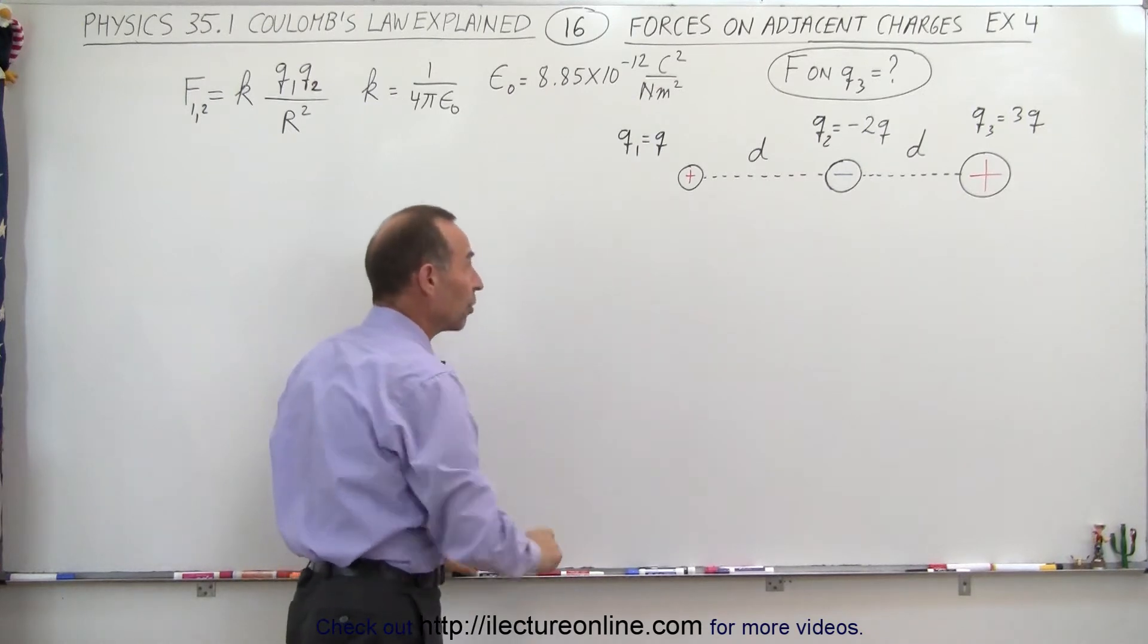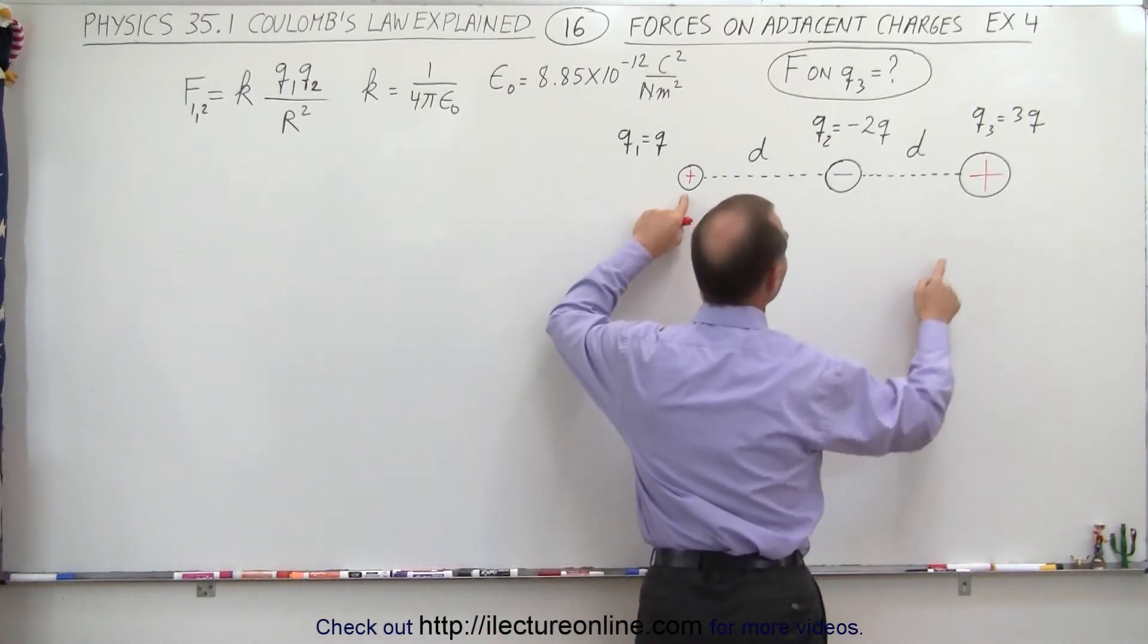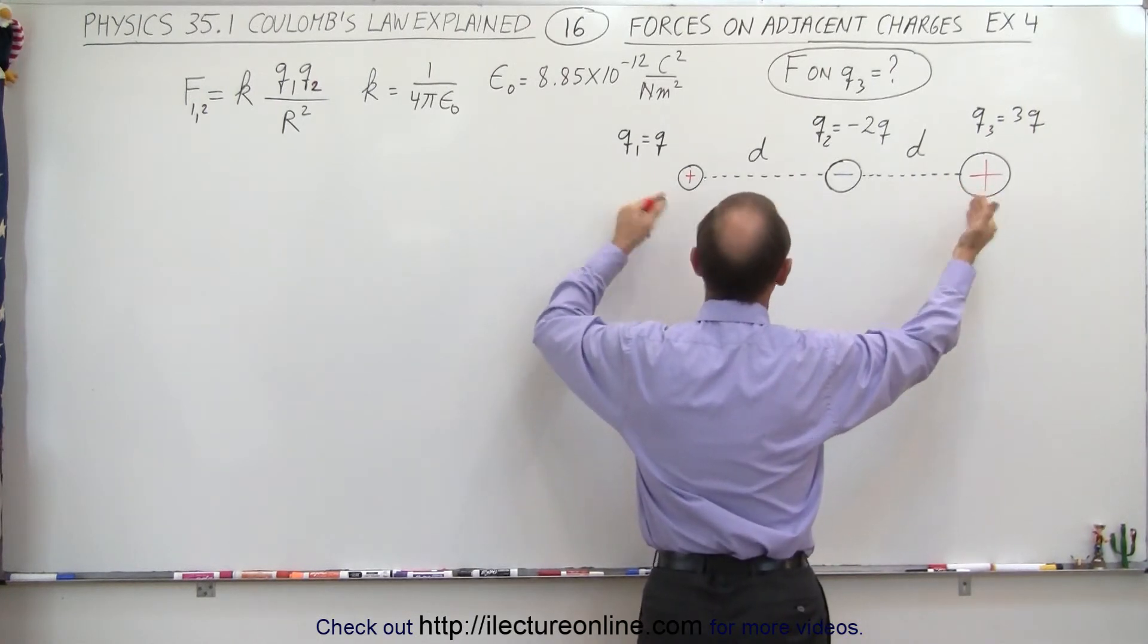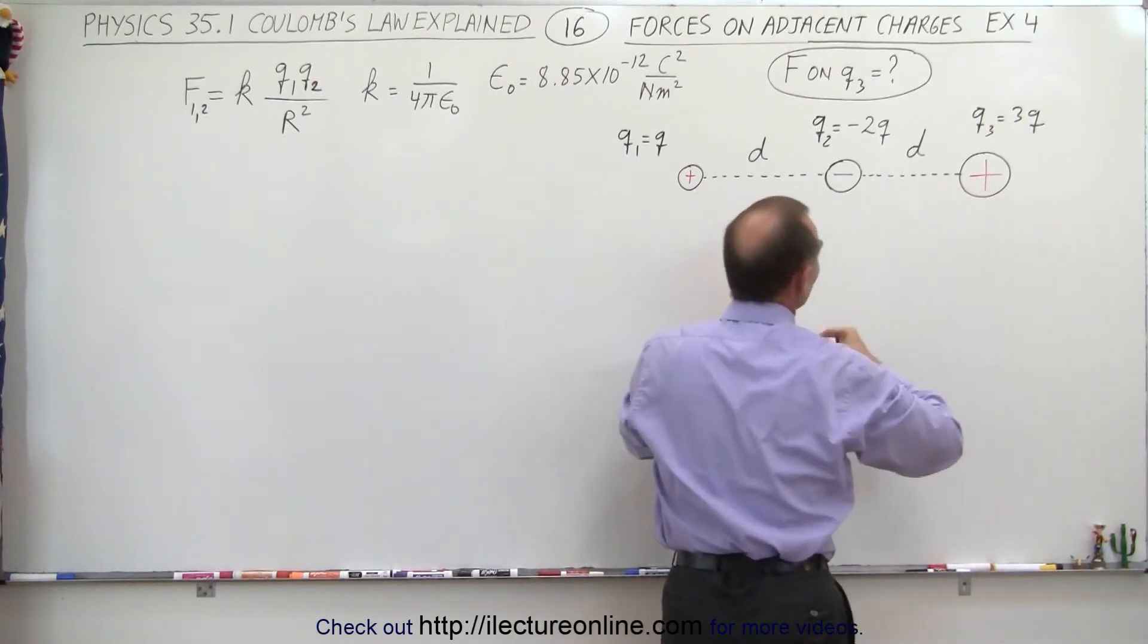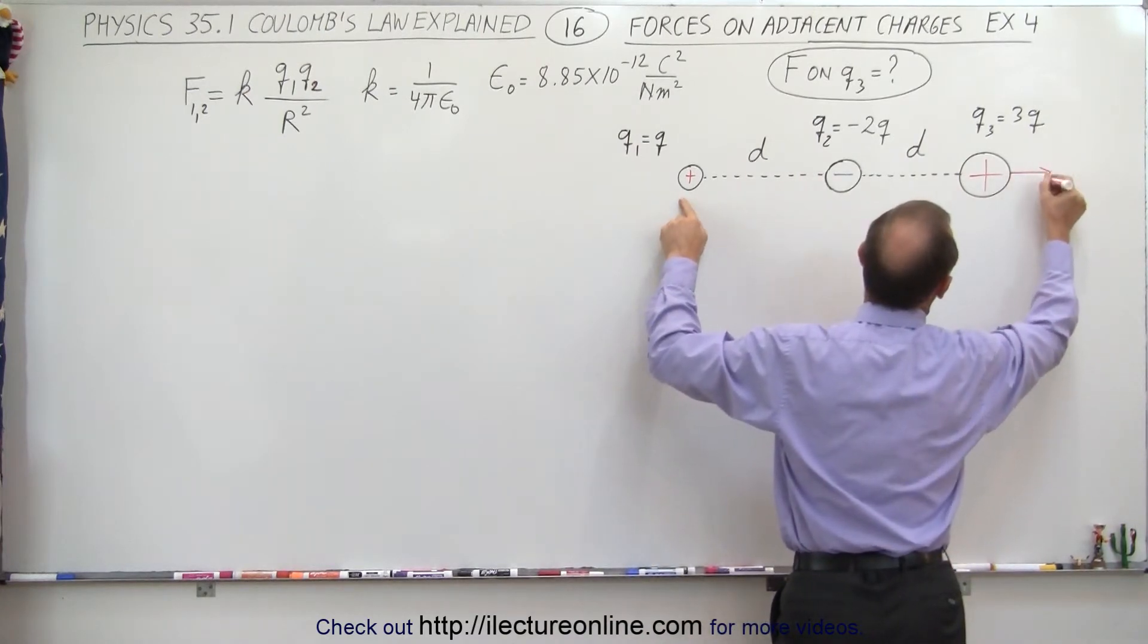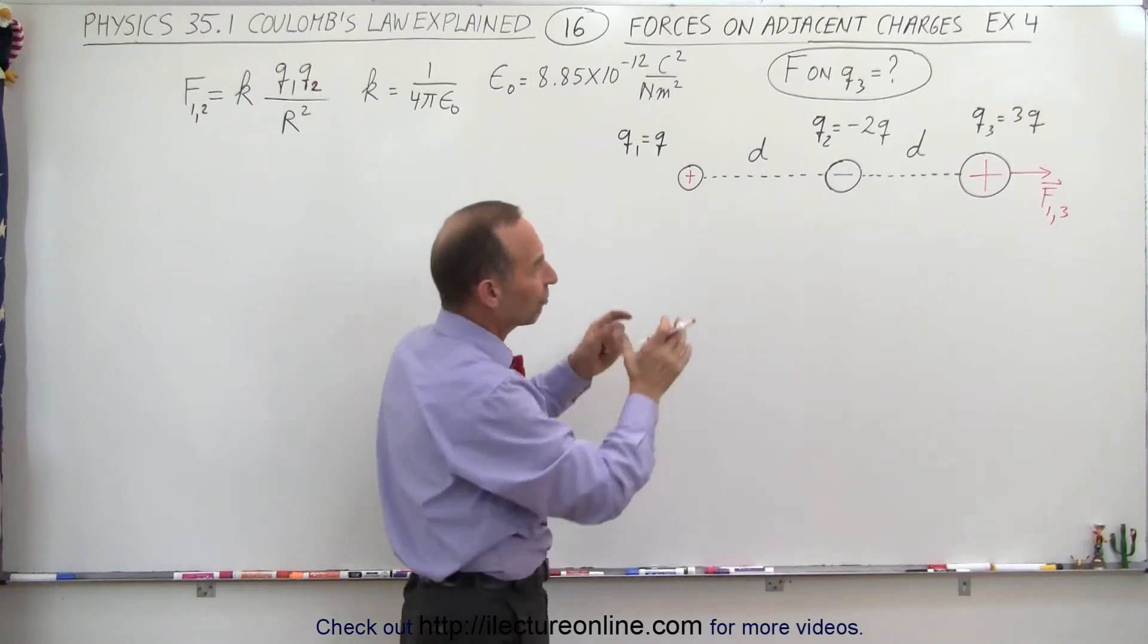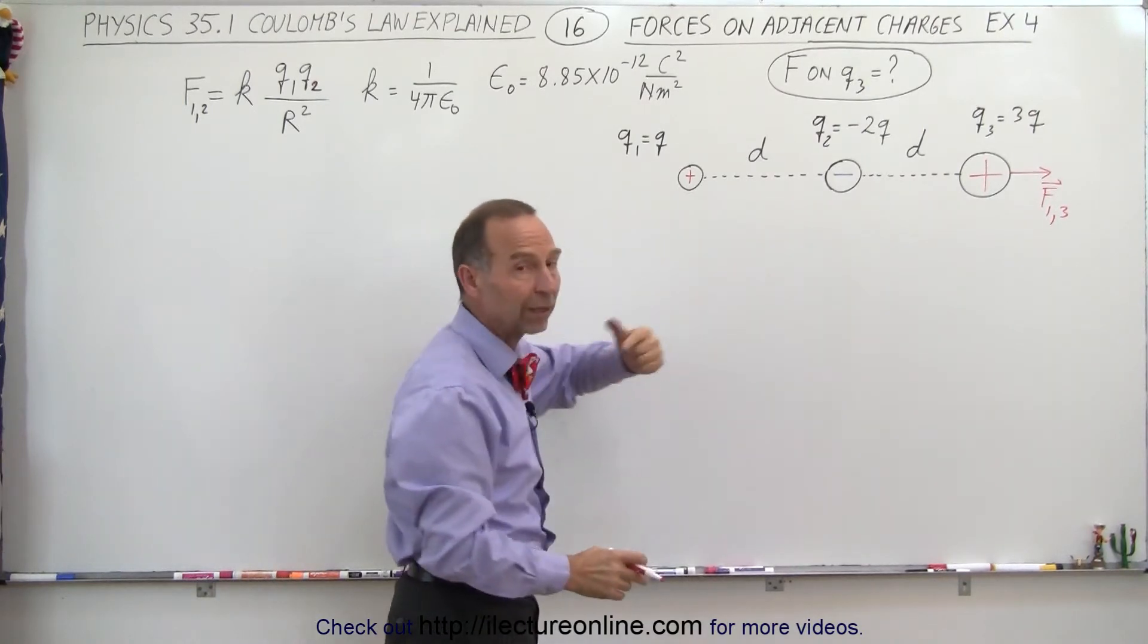So when we draw this graphically, first of all, the charge between 1 and 3, it's going to be a force of repulsion, so therefore we have a force pushing to the right due to the presence of Q1. So this here represents the force between 1 and 3, and it's in a positive direction. It's relatively small because they're farther apart, and Q1 is relatively small.